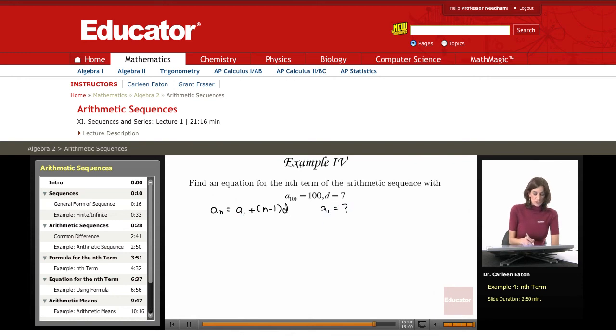I do know another term. I know an a sub n. Since I know a sub 101, and I know that n is 101 in that case, and I know the common difference, I can solve. So I'm going to first solve for the first term. Then I'll go back and use that first term to develop an equation for the nth term for this sequence.